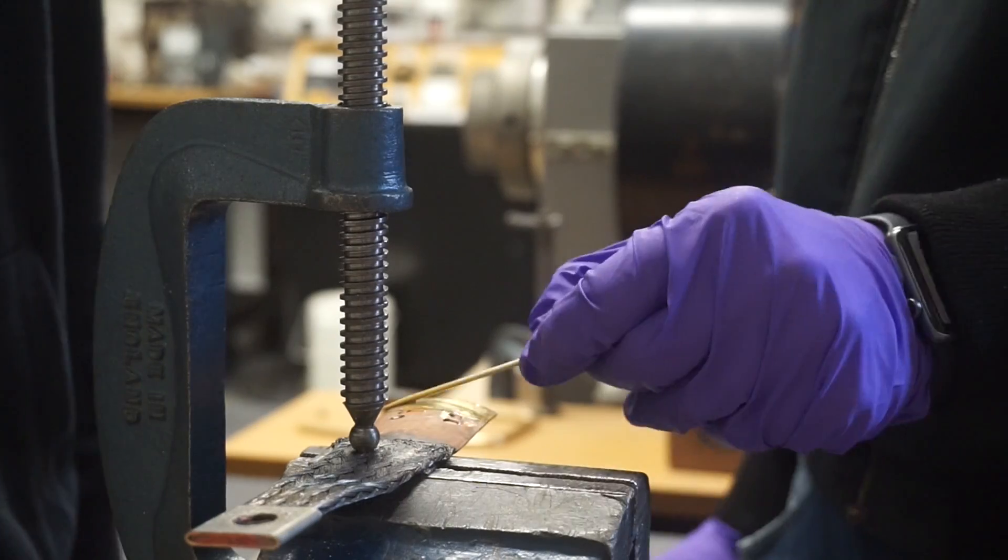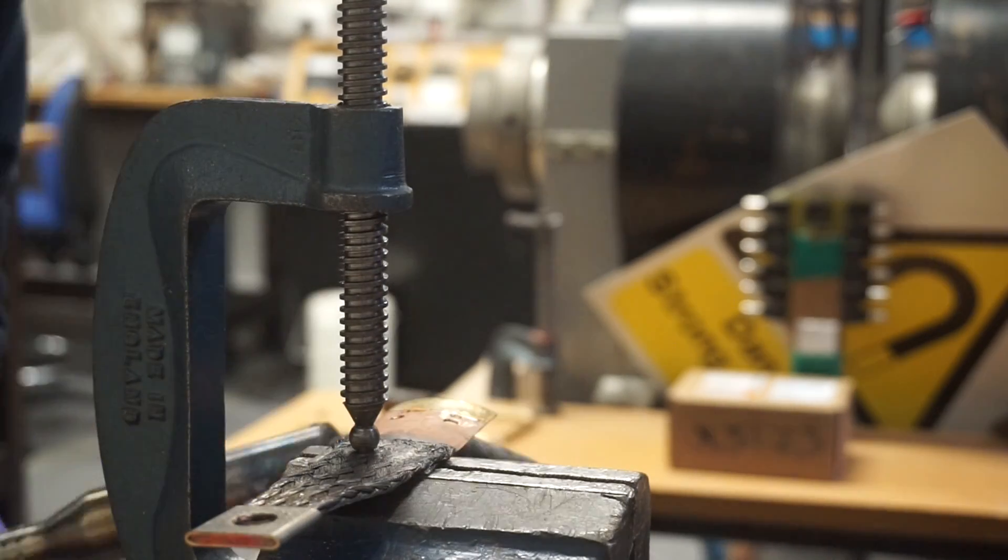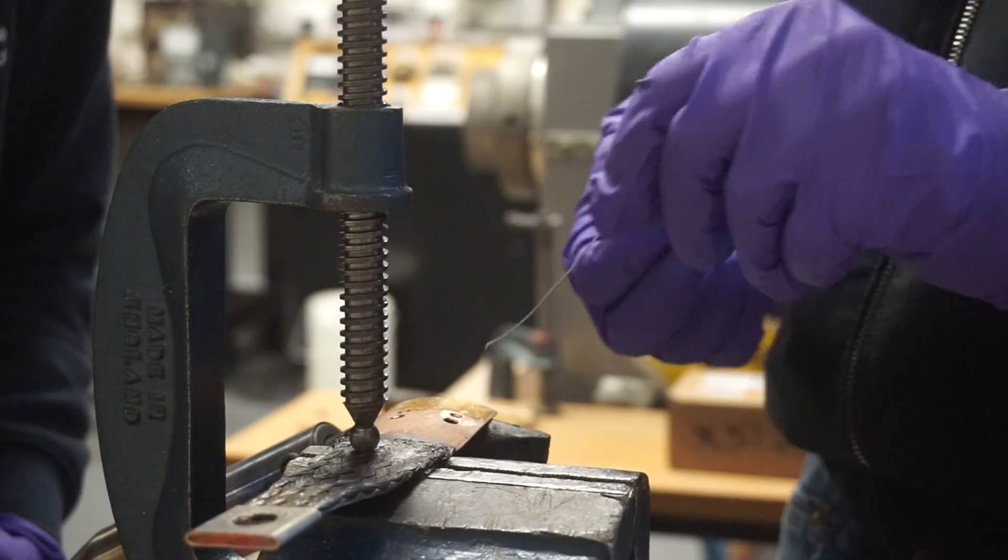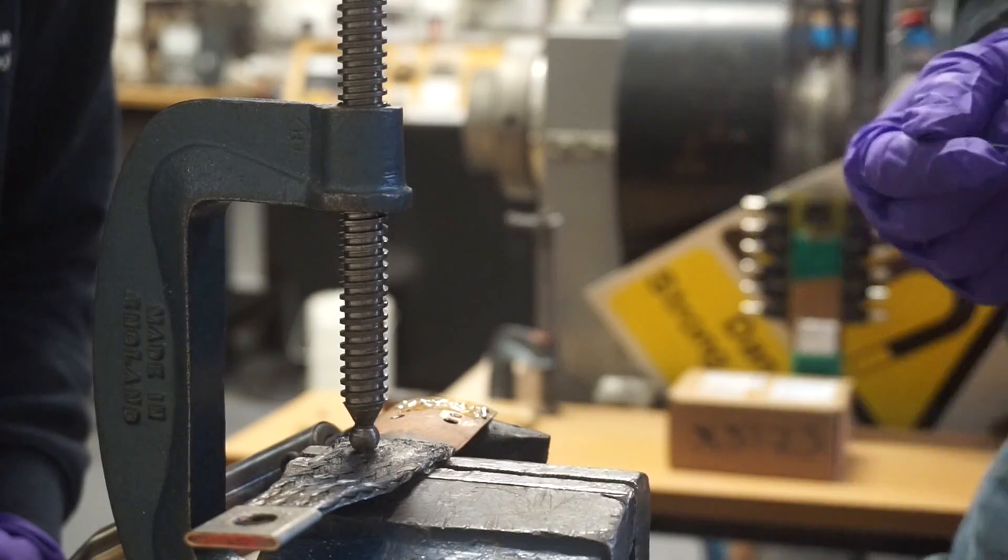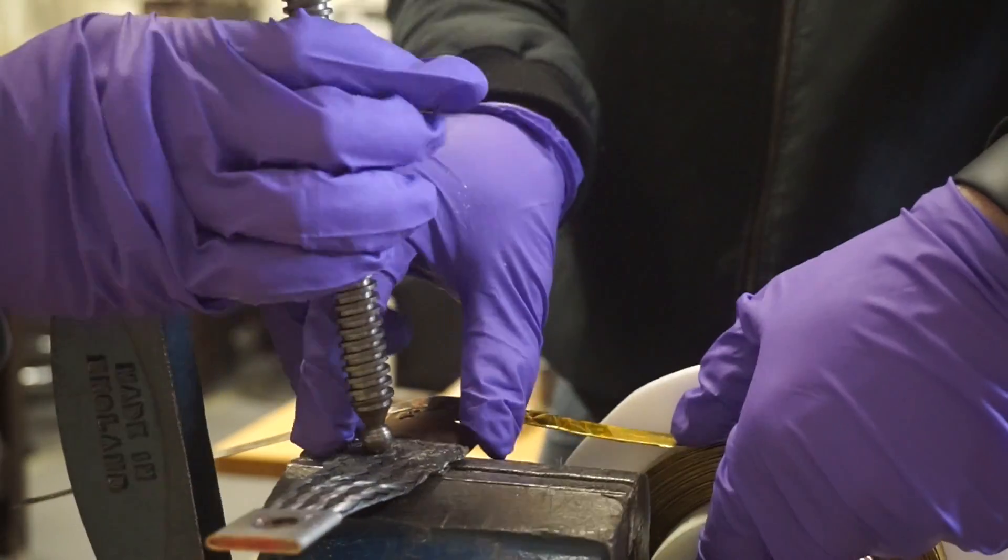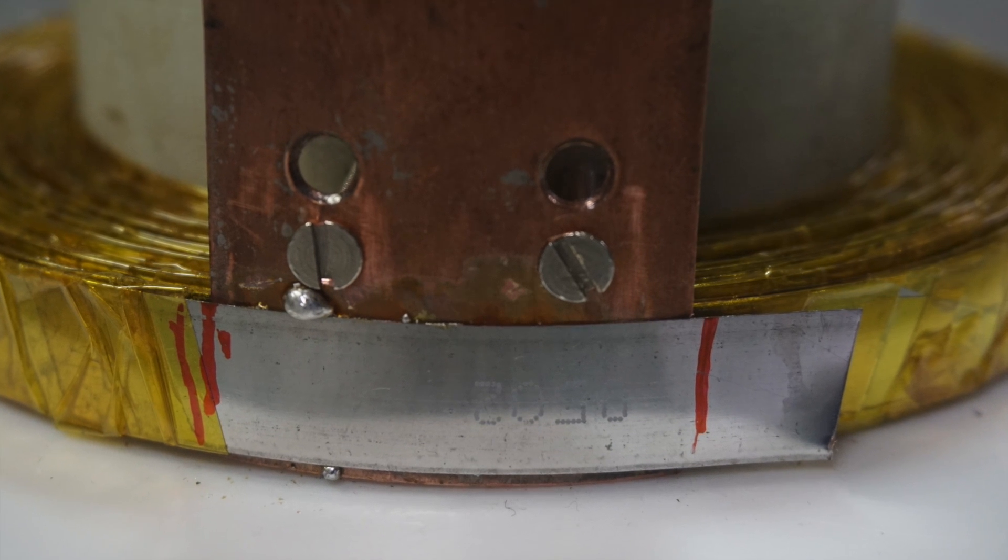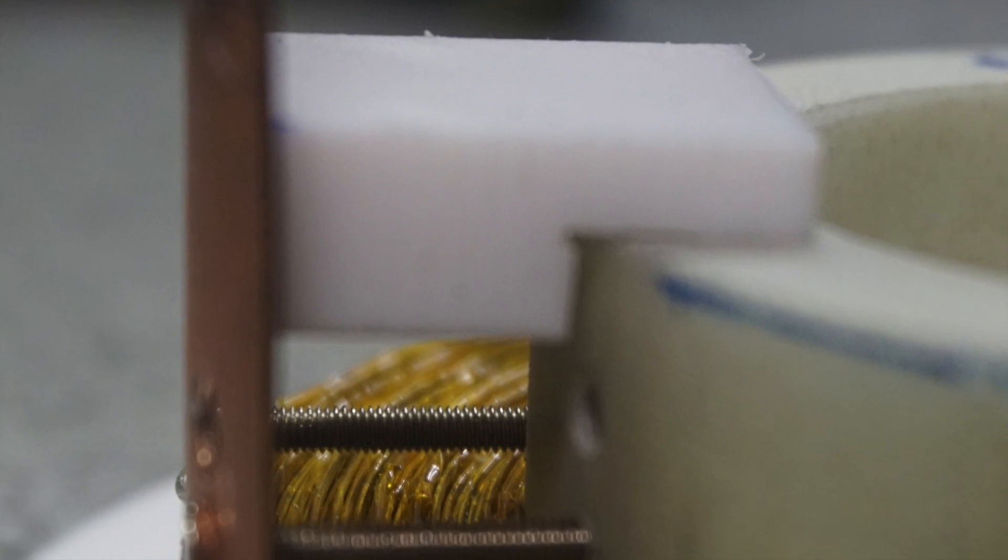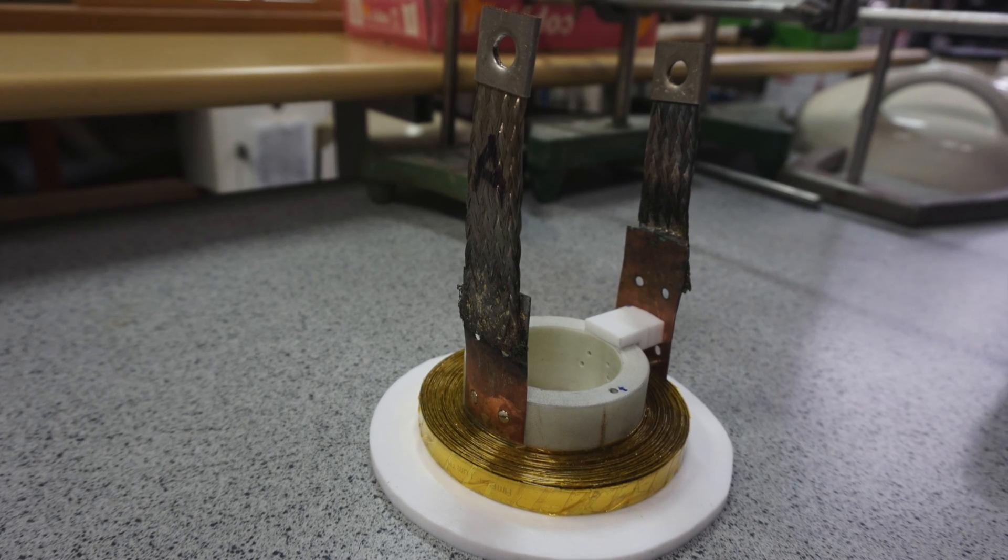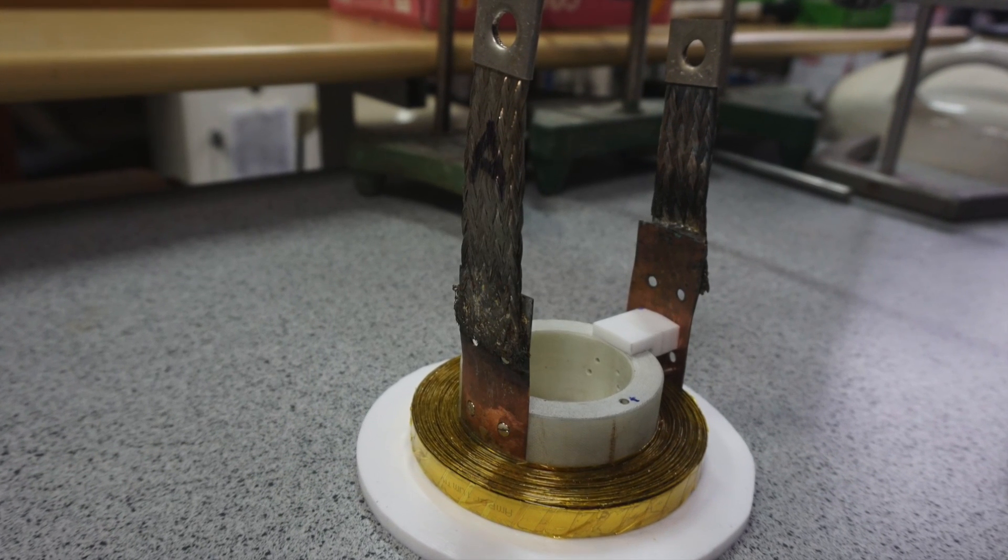To charge and discharge the superconducting magnetic energy storage device, we connected it to a circuit by soldering each end of the tape to copper plates. When soldering, we used low-temperature solder to ensure that the tape wasn't damaged. The copper plate was then screwed into the former as shown here. A wedge was also added to maintain the shape of the coil. The coil was now ready to be connected to the charging and discharging circuit.